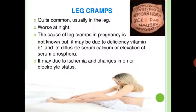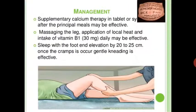Next is leg cramps, quite common and usually occurring in the leg at rest, especially at night. The cause of leg cramps in pregnancy is not known, but it may be due to deficiency of vitamin B1 and diffusible serum calcium, or elevation of serum phosphorus. It may also be caused by ischemia and changes in pH or electrolyte status. Management of leg cramps includes supplemental calcium therapy.